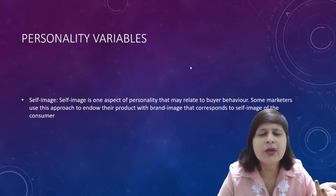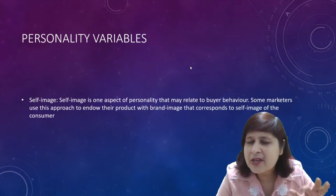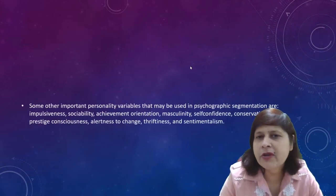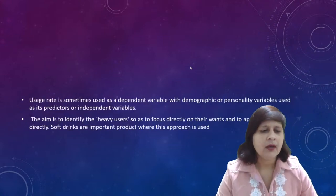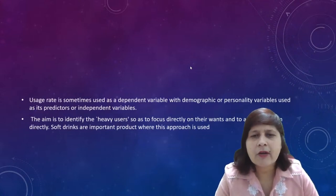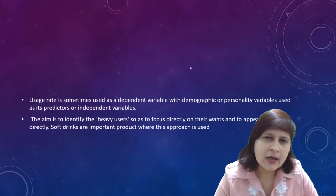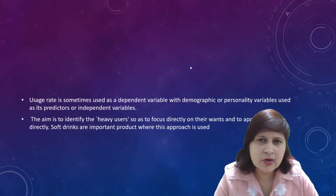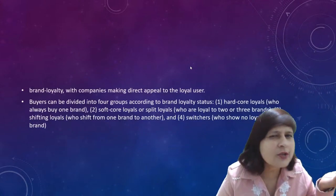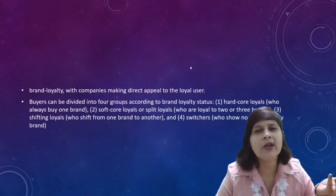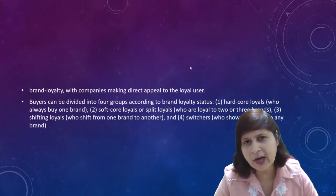Self-image is related to buyer behavior — some marketers use brand image that corresponds to the consumer's self-image. Usage rate is another basis — dividing the market by how much customers use the product, whether they are heavy users or occasional users. Then on the basis of brand loyalty, buyers can be divided into four groups: hardcore loyals, softcore loyals, shifting loyals, and switchers.